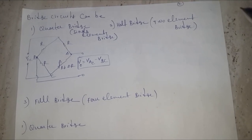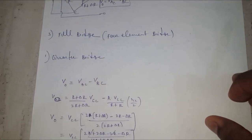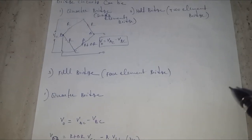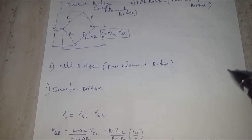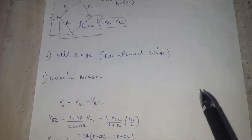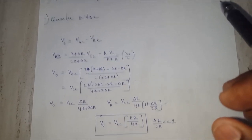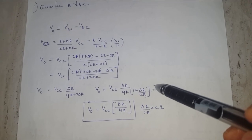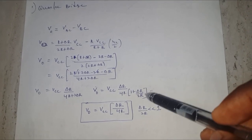We will see various types of bridge circuits: quarter bridge, half bridge, and full bridge. The quarter bridge circuit has only one sensor element in one arm of the Wheatstone bridge, and the resistance of the sensing element changes with respect to the external physical variable. Deriving the equation for this quarter bridge gives V_out equal to V_AC minus V_BC.